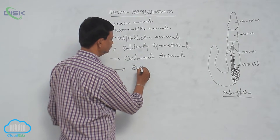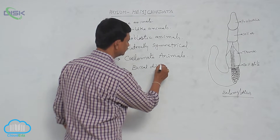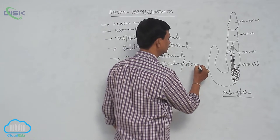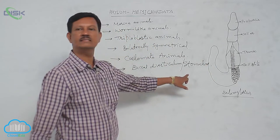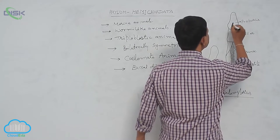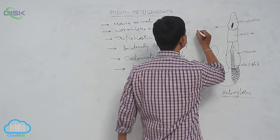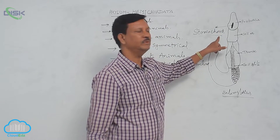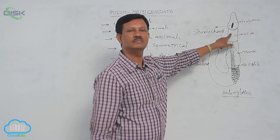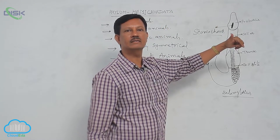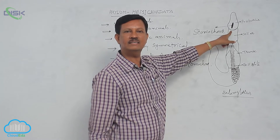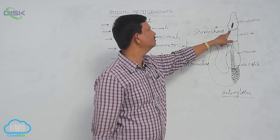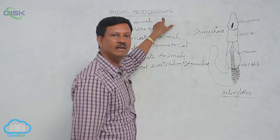Another character is the buccal diverticulum. This rod-like structure is present at the anterior end of the body in the proboscis region and is known as the stomochord. Previously, scientists believed it was a notochord, which is why hemichordates were included in the chordata. However, recent investigations reveal that it does not contain true notochord characters — its nature is doubtful — and so hemichordates were removed from the chordata and placed in the non-chordata.